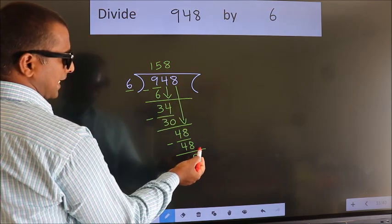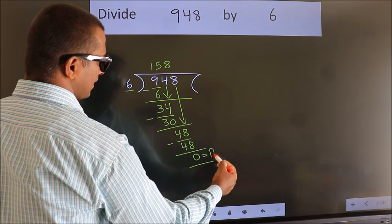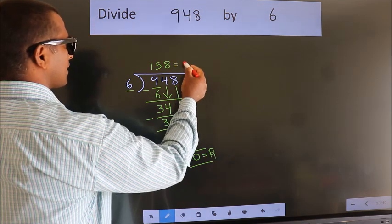No more numbers to bring it down. So, we stop here. This is our remainder. This is our quotient.